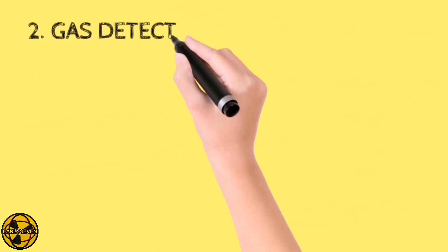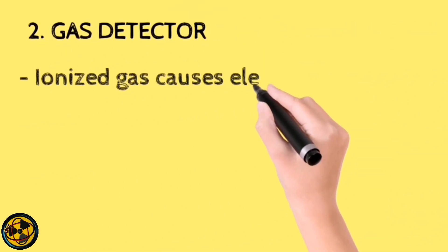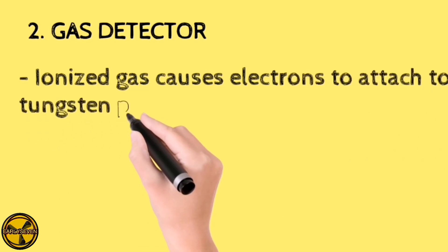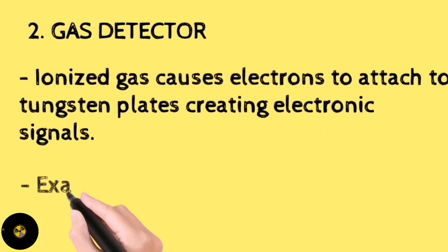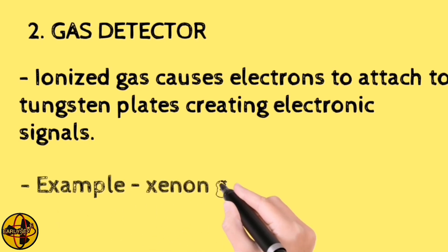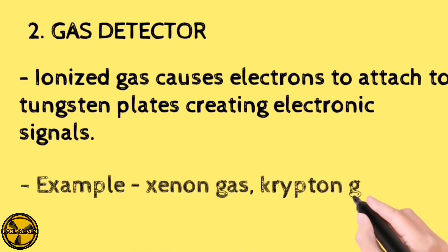The second type of detector is the gas detector. It ionizes gas, causes electrons to attach to tungsten plates, creating electronic signals. Example of this are xenon gas and krypton gas.